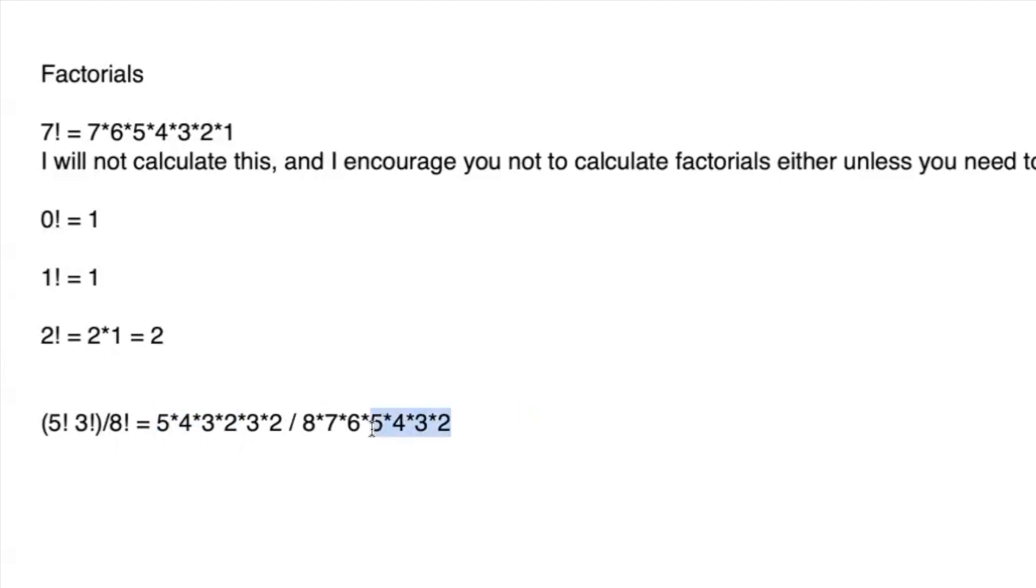And the 8 factorial also has that as part of it. So if you have something like 5 factorial over 8 factorial, all of the things in the 5 factorial are going to straight up cancel with the stuff in the 8 factorial. So those 5 times 4 times 3 times 2 cancel with this.